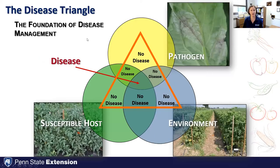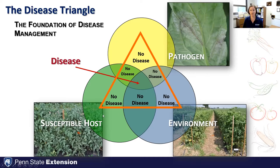All of this comes down to one of the most fundamental concepts in plant pathology: the disease triangle. In order for disease to occur, we need the pathogen present, an environment favorable for that pathogen, and a susceptible host. When we think about integrated disease management, we're really thinking about breaking up this triangle on one or more sides.